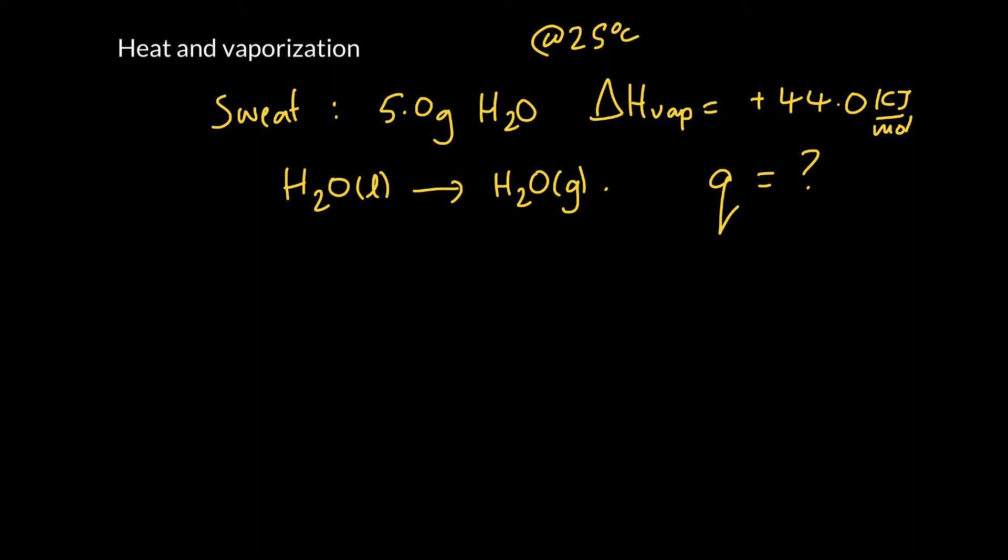So we can set this up as a conversion factor problem. We can take the 5 grams of water, and we need to convert it to moles. So remember that we add up the weights of 2 hydrogens and an oxygen, we get 18.02. So that's the molar mass, that's how many grams there are in a mole. And we should always say what it is, it's a mole of water and a gram of water. And the 44 kilojoules per mole is telling you that there's 44 kilojoules of enthalpy required every time you vaporize a mole of water. So we can just write it in as a conversion factor.